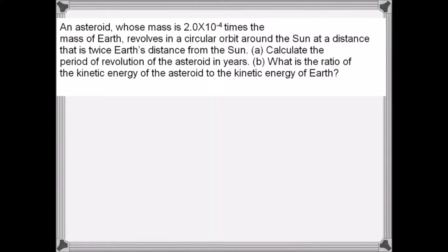An asteroid whose mass is 2 × 10⁻⁴ times the mass of Earth revolves in a circular orbit around the sun at a distance that is twice Earth's distance from the sun.